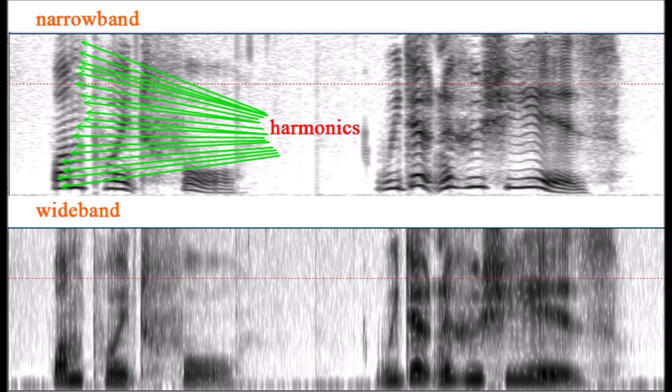That is why phoneticians use wideband spectrograms, like the one you see on the bottom image. Wideband spectrograms allow you to see formants, and formants give you information about segments. Now, you may argue that in the narrowband spectrogram you can still see the formants, though superimposed on the harmonics. And that is true, but narrowband spectrograms have at least twice as many frequency bands — in other words, twice as much information — as wideband spectrograms. And this will translate into twice as many computations.